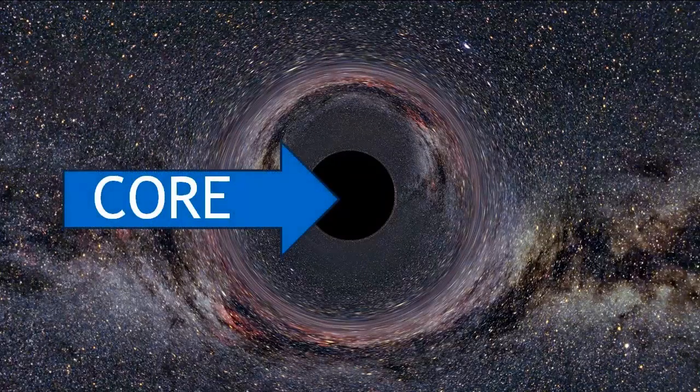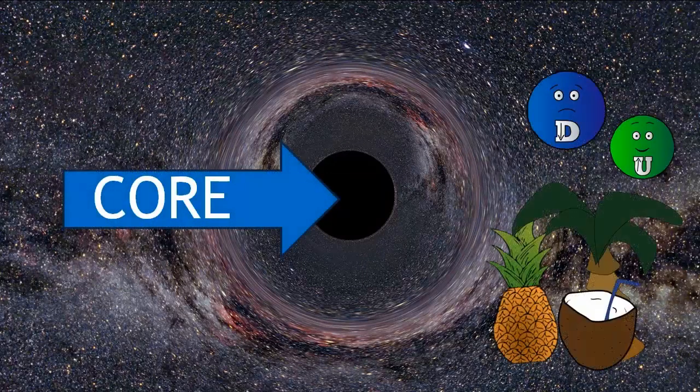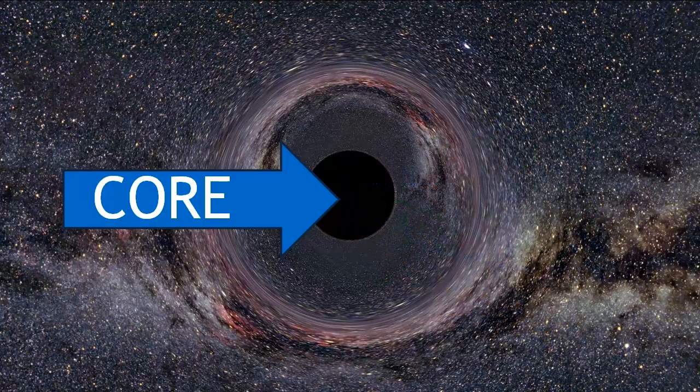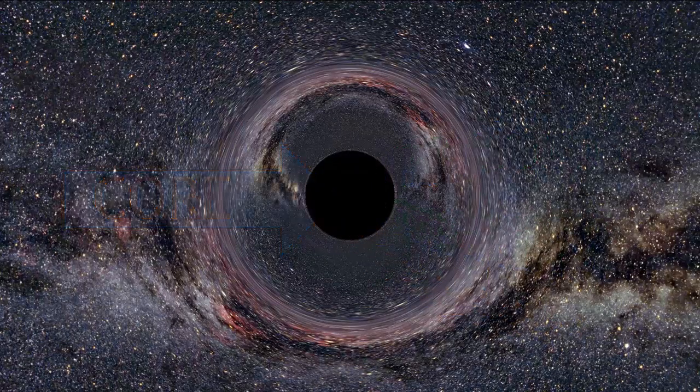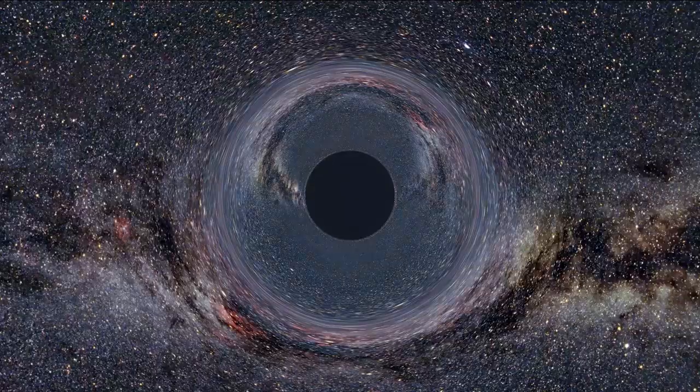The core of a black hole is possibly made up of quarks or other exotic material. At this point, we don't know. Surrounding this core is a mathematical boundary called the event horizon.